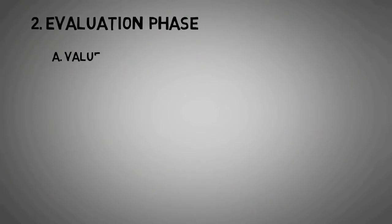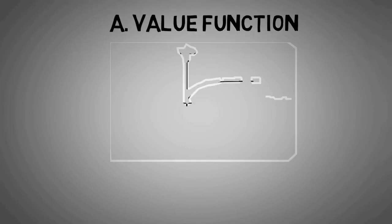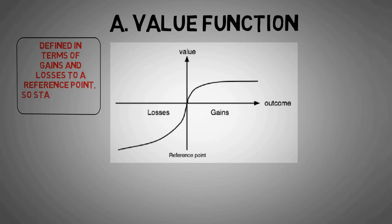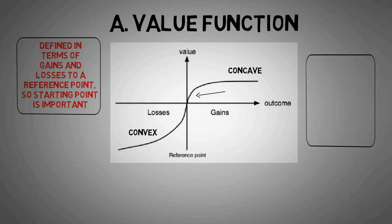Under the evaluation phase there are two functions: value function and weighing function. Value function has three characteristics. It is defined in terms of gains and losses to a reference point, so starting point is important. The S-shaped curve shows that it is convex below the reference point and concave above it. The curve is more sensitive to changes near the origin as compared to far from it. It also means people are risk averse in times of gain and risk seeker in situation of loss - so domain affects risk propensity.